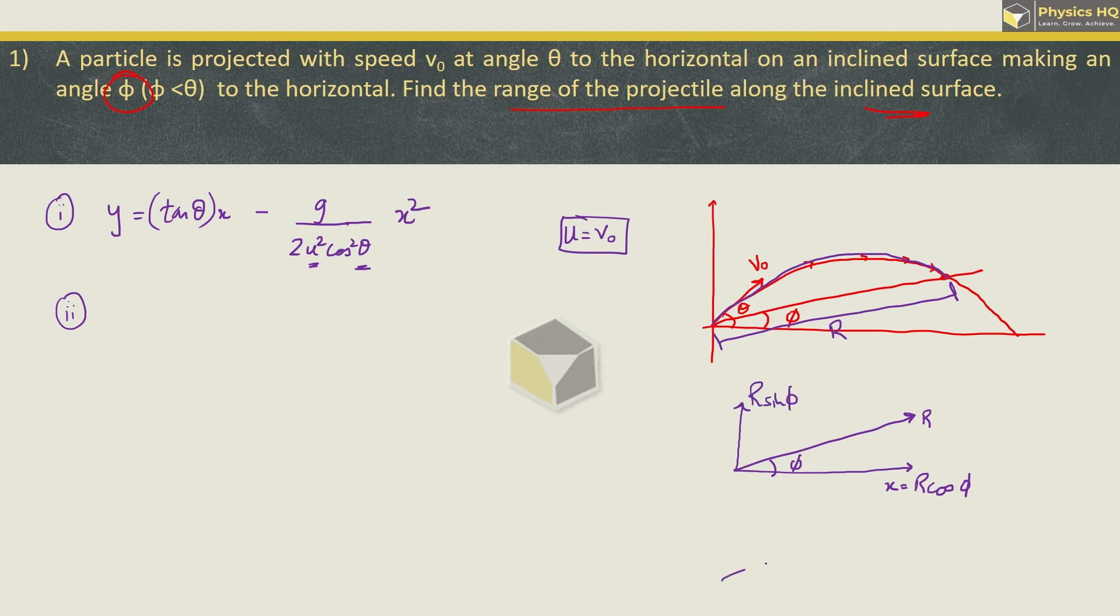We have discussed this many times. If you have a triangle like this, this angle is phi. And if it is hypotenuse r, then the adjacent side will be cos phi. Cos phi is adjacent upon hypotenuse. So basically the adjacent side is r cos phi. And the opposite side will be r sin phi. So we get these two components.